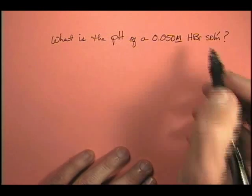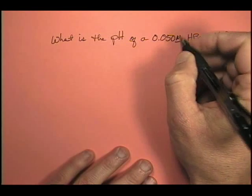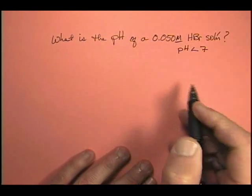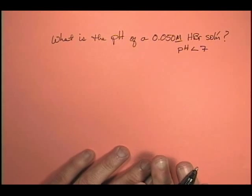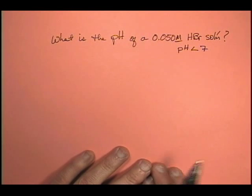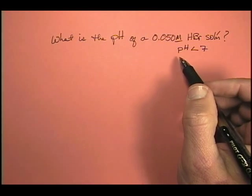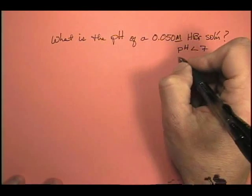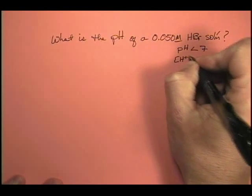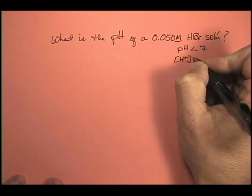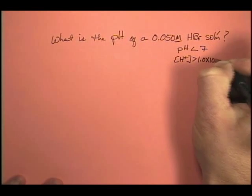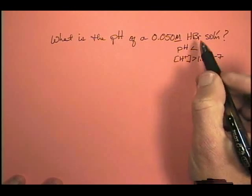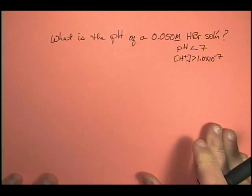So I know this is an acid, so my pH should be something less than 7. So I know that's the bottom line. Also, I know, remember we always have to do these checks. Acid, so the pH is going to be below 7. Also, I know that the hydrogen ion concentration is going to be greater than 1.0 times 10 to the minus 7. Alright, those things are both true for an acid solution.